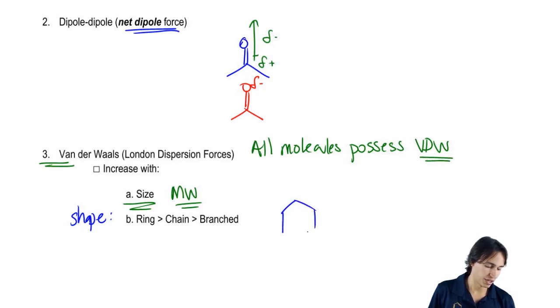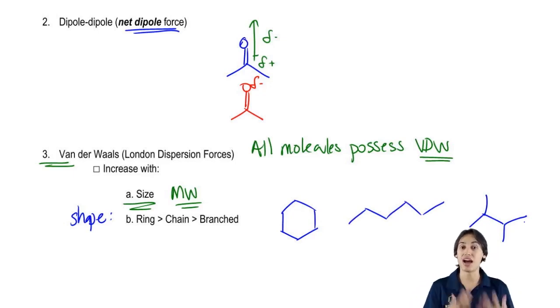So here I've got a ring that's a six-membered ring. Here I've got a six-membered chain and then here I've got another six-membered chain. What I want to know is out of these three, which of them is going to have the highest van der Waals?